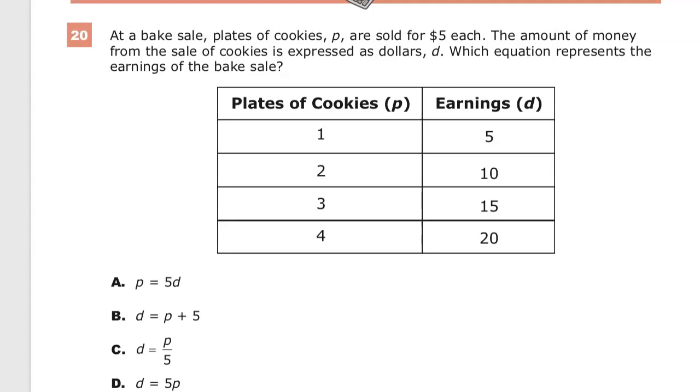This is the grade 6 math practice test for TN Ready question number 20, at least on this edition. At a bake sale, plates of cookies, P, are sold for $5 each. The amount of money from the sale of cookies is expressed as dollars, d. Which equation represents the earnings of the bake sale?